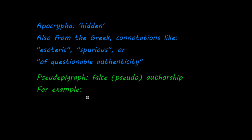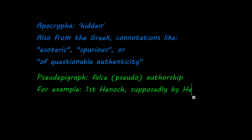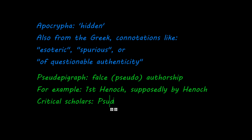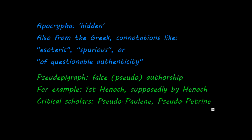One famous example could be the first book of Enoch, which was supposedly written by Enoch, a biblical hero. Something else you may want to keep in mind is that sometimes scholars would talk about pseudo-Pauline or pseudo-Petrine literature. In that case they refer to the New Testament books written by Paul or Peter — or at least some of them — and they would say, well, actually it wasn't really written by them. So then they use the word pseudo-Pauline or pseudo-Petrine, and now you know what that means.